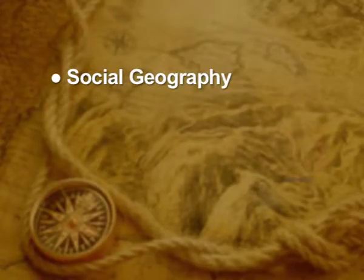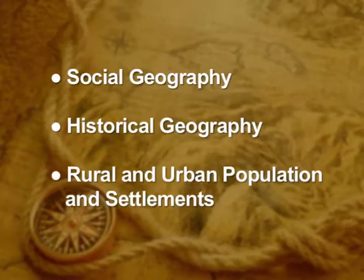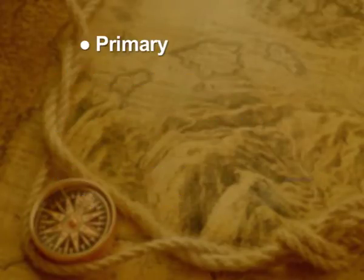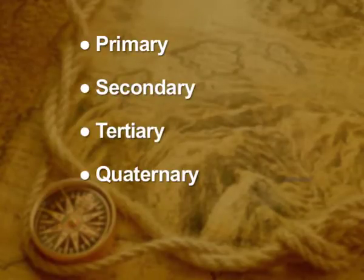The highlighted sub-branches include social geography, historical geography, rural and urban population and settlements. We will also learn about the primary, secondary, tertiary and quaternary activities practiced in different parts of the world.